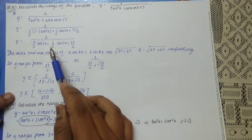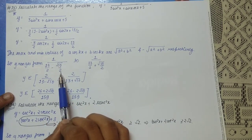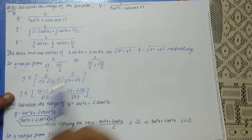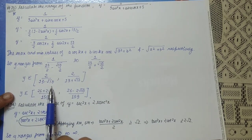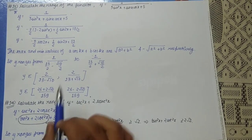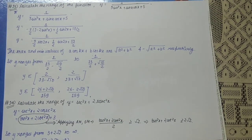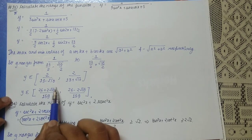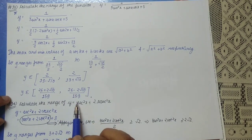Therefore y ranges from 1/(13/2 − √10/2) to 1/(13/2 + √10/2), which simplifies to 2/(13 − √10) to 2/(13 + √10). After rationalizing, y ∈ [(26 − 2√10)/159, (26 + 2√10)/159].